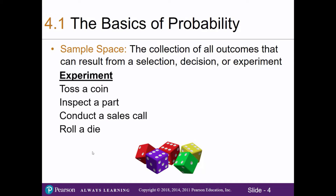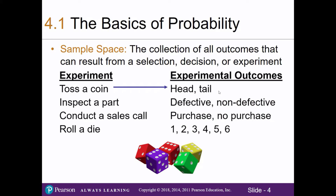Here we have some examples of different experiments: I can toss a coin, inspect a part such as a phone, conduct a sales call to try to sell a vacuum, or roll a six-sided die. The sample space for tossing a coin is heads or tails; inspecting a phone yields defective or non-defective; a sales call results in purchase or no purchase; and rolling a die gives outcomes one through six.